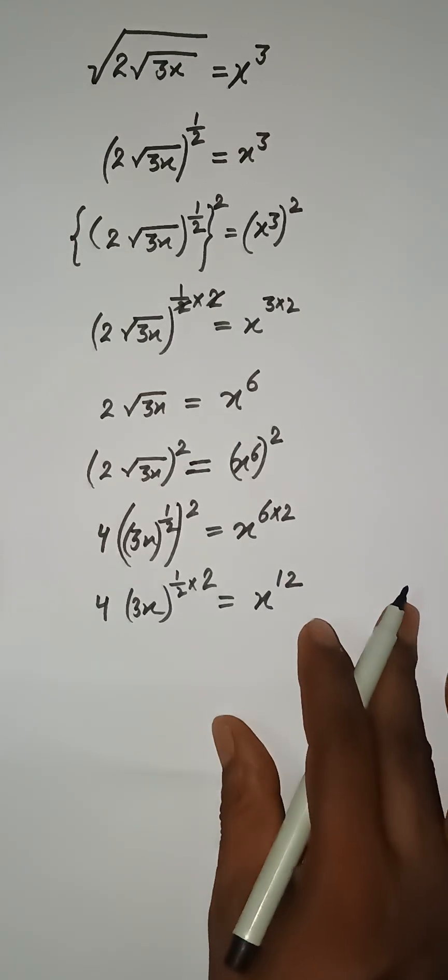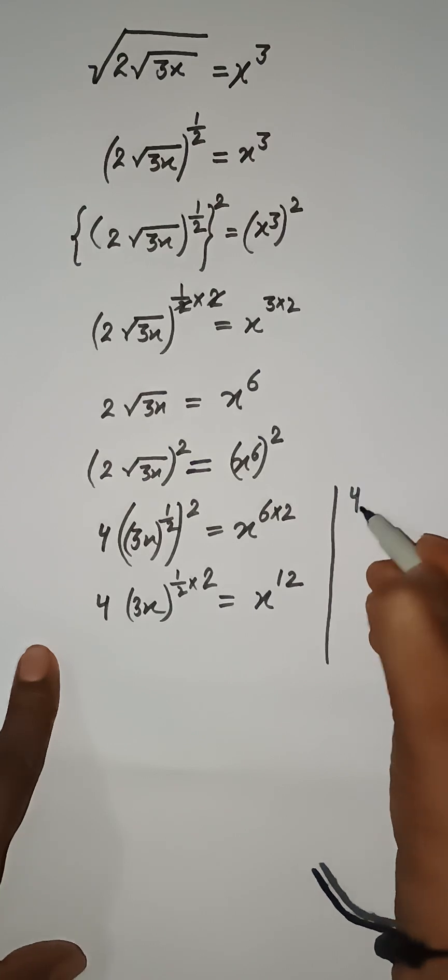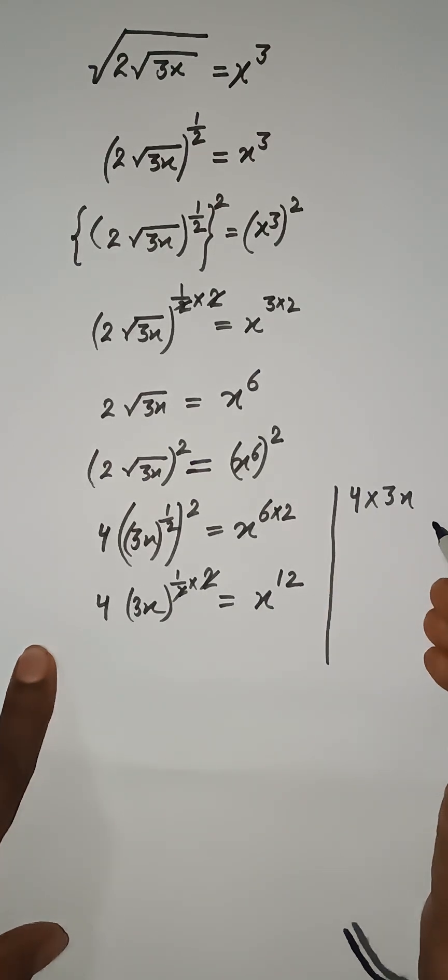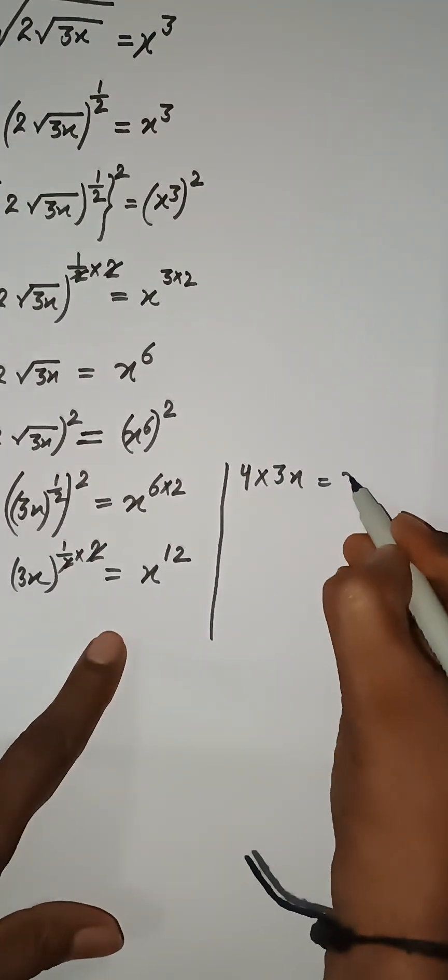Now we can see that I can write this expression: here we have 4, and this 2 cancels, we have 4 multiply 3x, 4 multiply 3x, and that is equal to x¹².